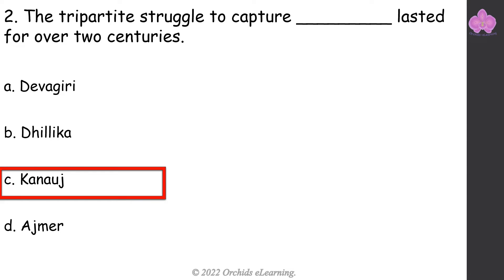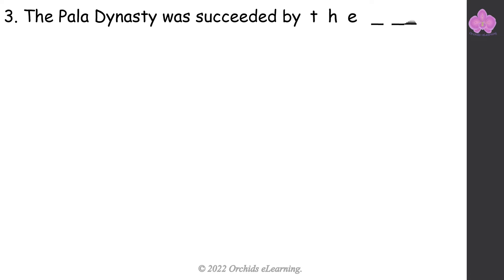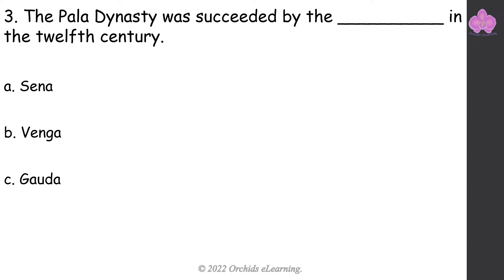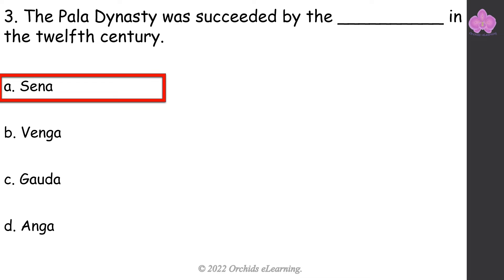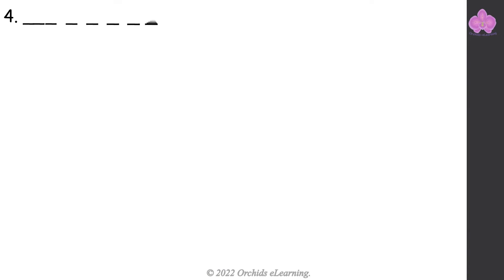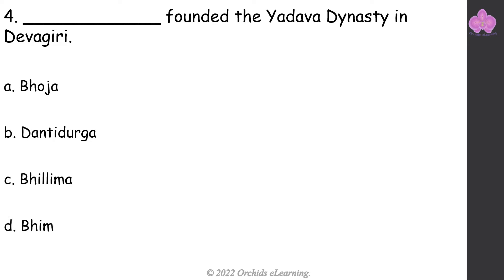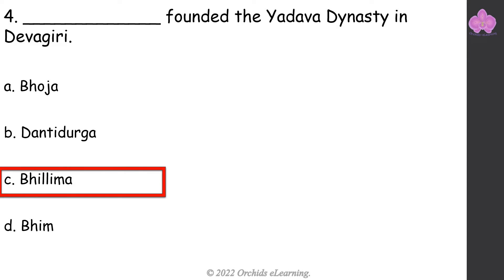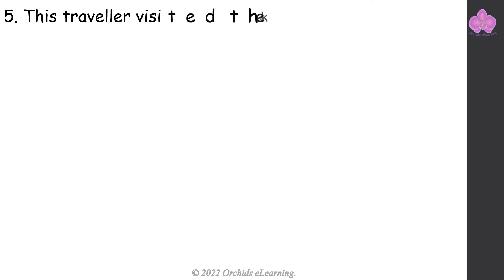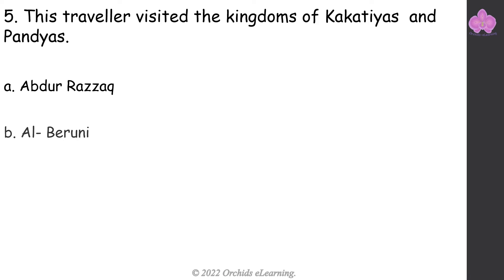Kanauj — The Pala dynasty was succeeded by the Senas in the 12th century. Bhillima founded the Yadava dynasty in Devgiri. This traveler visited the kingdoms of Kakatiyas and Pandyas.